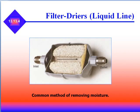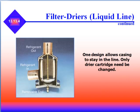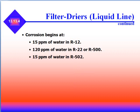Every system should have a filter dryer in the liquid line — it's a common method of removing moisture as well as other debris. Filter dryers must have enough drying material for both high and low moisture ranges. The dryer is fully activated and keeps the refrigerant clean and dry, installed in the liquid line. It consists of a cylinder of brass, copper, or steel fitted with a desiccant chemical that can absorb 12 to 16 percent of its weight in moisture. One design allows the casing to stay in the line while only the cartridge is changed. The refrigerant must be removed before opening the filter dryer. Corrosion begins with 15 parts per million of water in R12, 120 parts per million in R22, and 15 parts per million in R502.